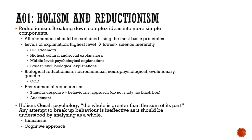Biological reductionism covers neurochemistry, neurophysiology, the evolutionary approach, and genetics. You can already tell me about neurochemistry — depression and serotonin, OCD and serotonin and dopamine, schizophrenia and dopamine. Neurophysiology covers the physical elements of the brain. You can talk about structure, localisation, and lateralisation — which parts of the brain control which behaviours. You know all of those things already from biopsychology.